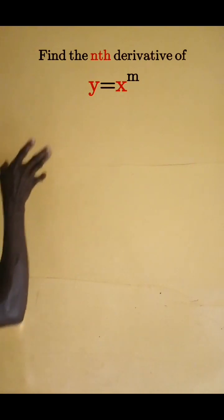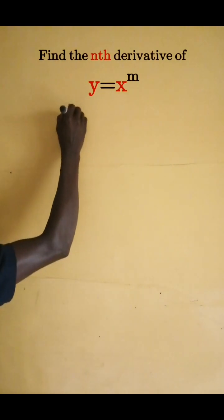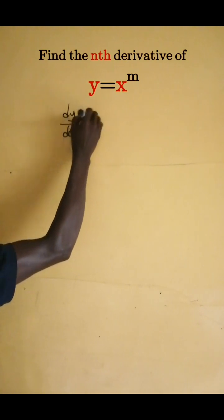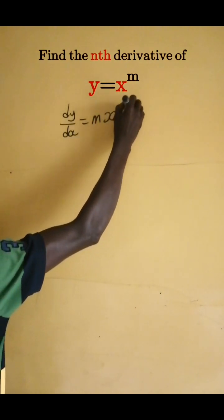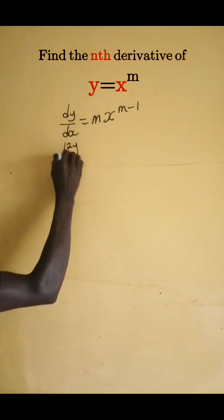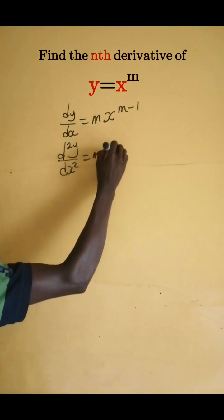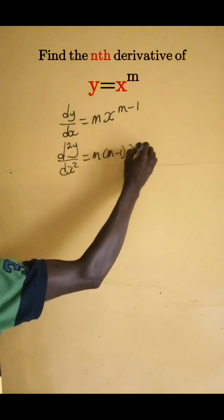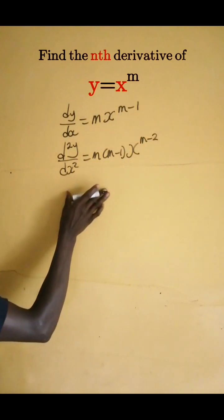Find the nth derivative of y equals x to the power m. Let us find the first derivative: dy/dx equals m times x to the power m minus 1. Now the second derivative: d²y/dx² equals m times (m minus 1) times x to the power m minus 2.